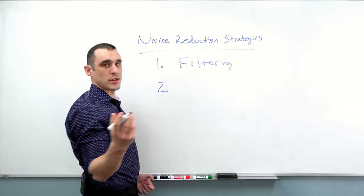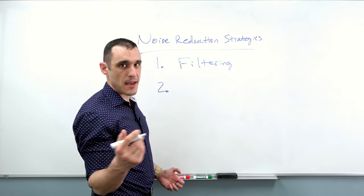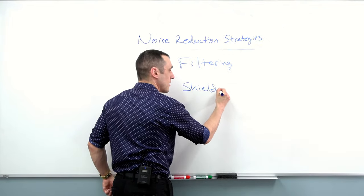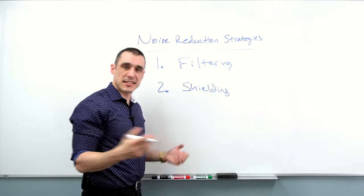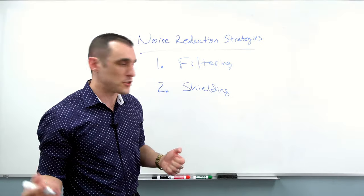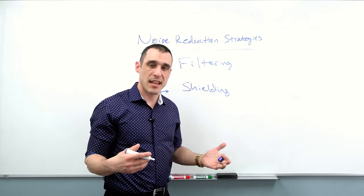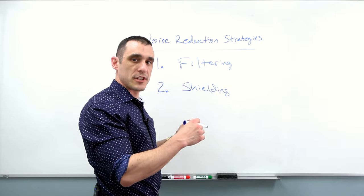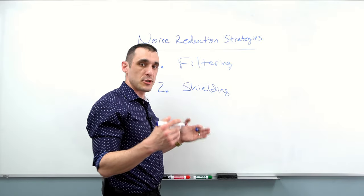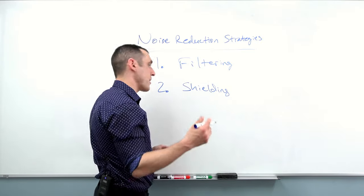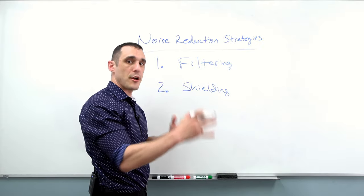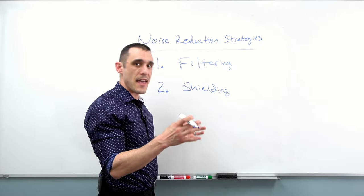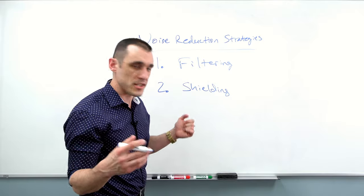The next common noise reduction strategy that people like to bring up is shielding. If you ask 10 different designers what shielding is, you'll probably get about 10 or 20 different answers. Most people, when they refer to shielding, are probably referring to a Faraday cage — basically putting a bunch of metal around the problem circuit and grounding it, which will essentially eliminate the noise.